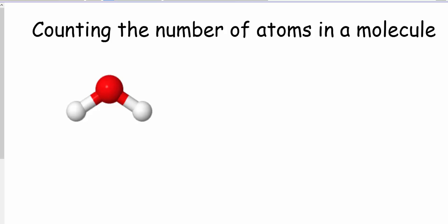Hi, chemistry students. One of the things we need to be able to do in Chemistry 11 is count the number of atoms in a molecule. Here I've got a picture of a water molecule, and I think that when we have a picture of a compound or molecule, it's really easy to see how many atoms of each element are in that compound. We can see that the big red atom in the center is oxygen, and then we've got two hydrogen atoms attached on either side of the water molecule.